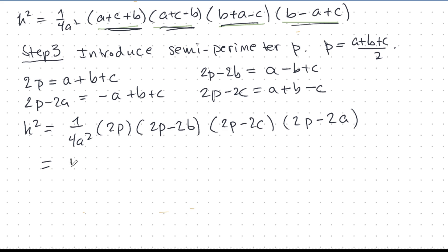And we can clean this up. Let's take out all the twos. We have 16 over 4A squared and then P. And I'll rearrange it in alphabetical order. P minus A, P minus B, P minus C. So, we're very close.